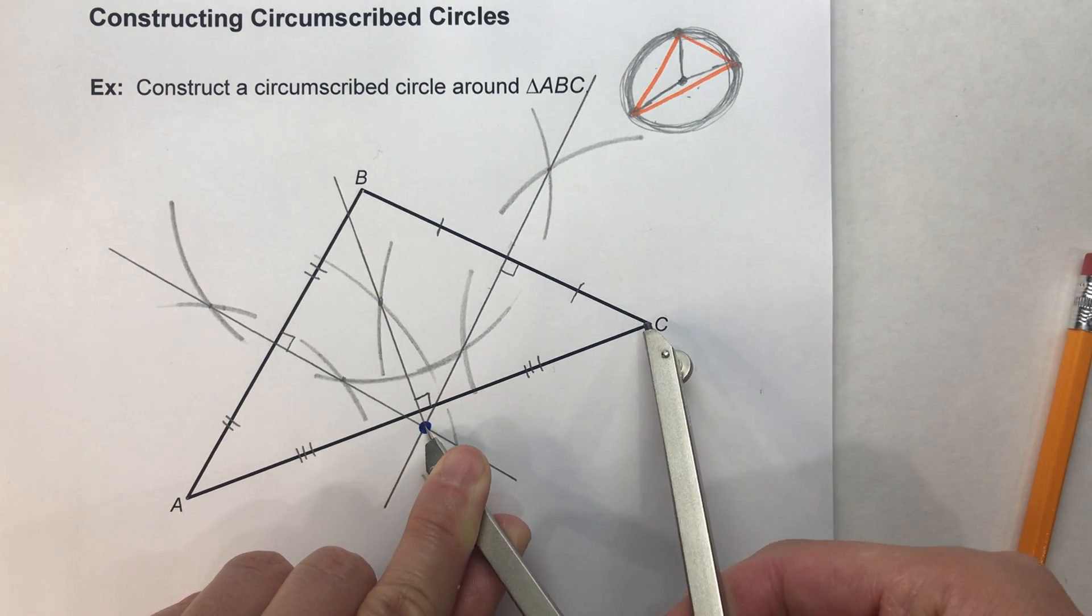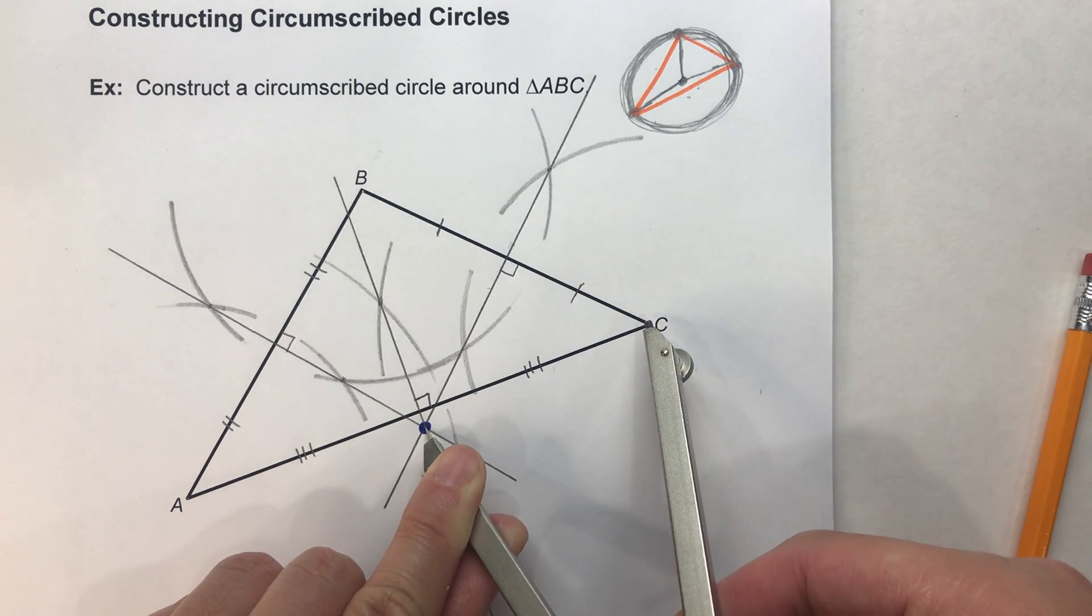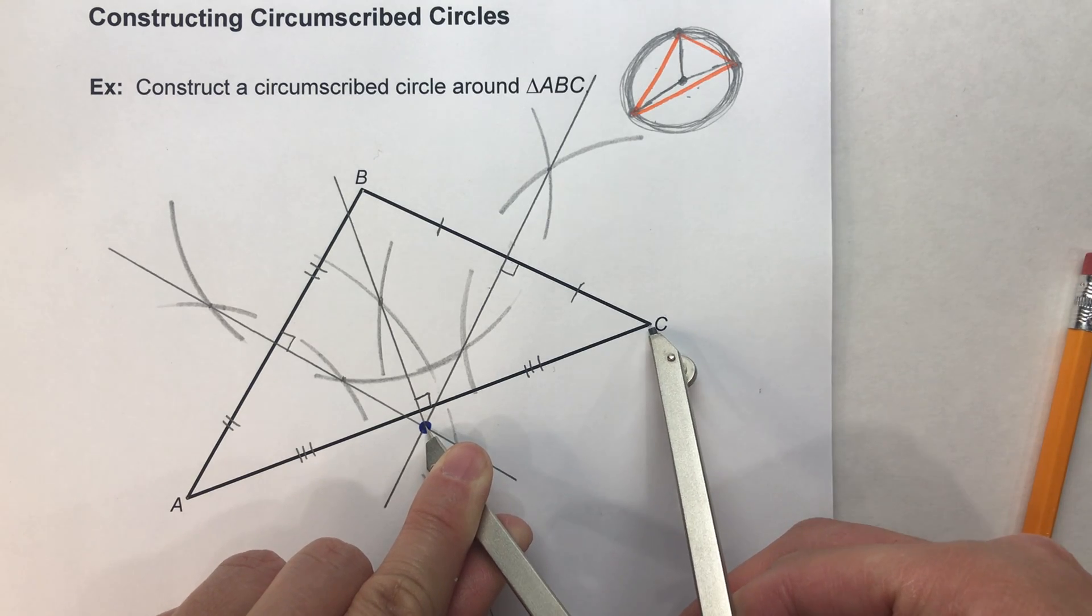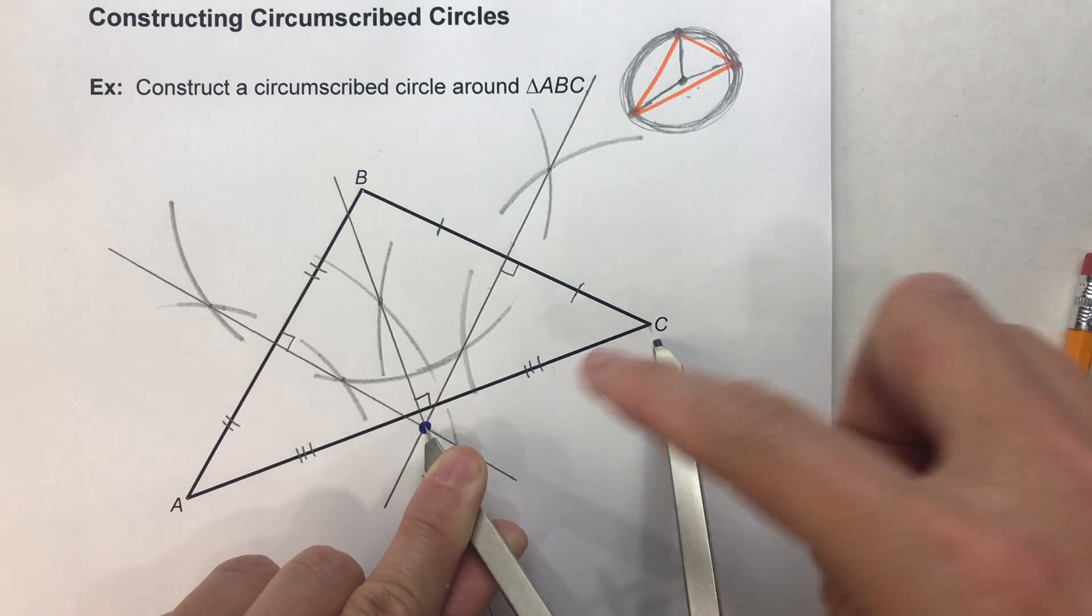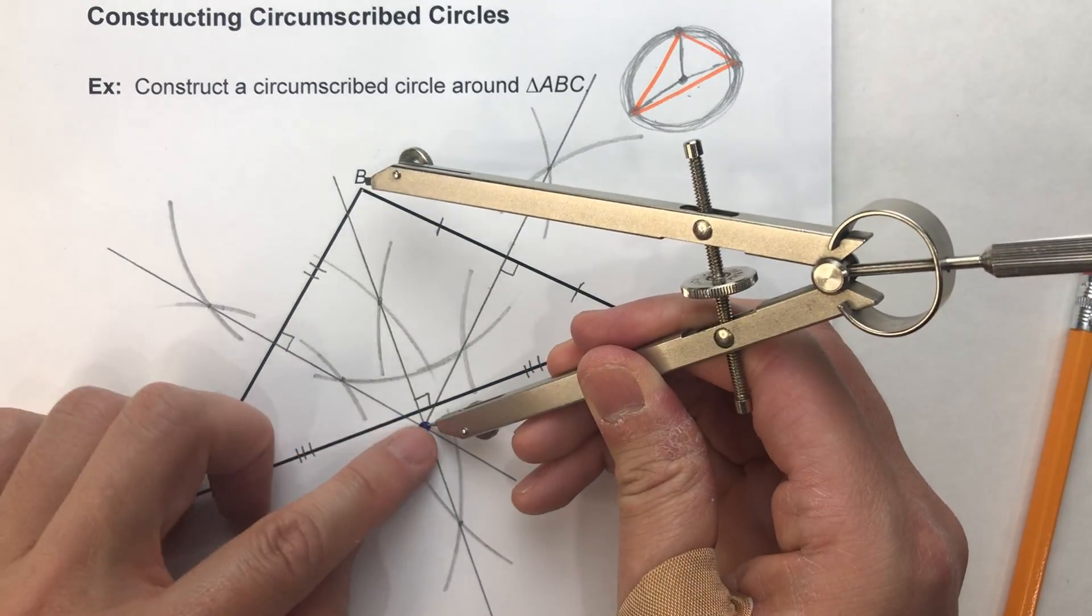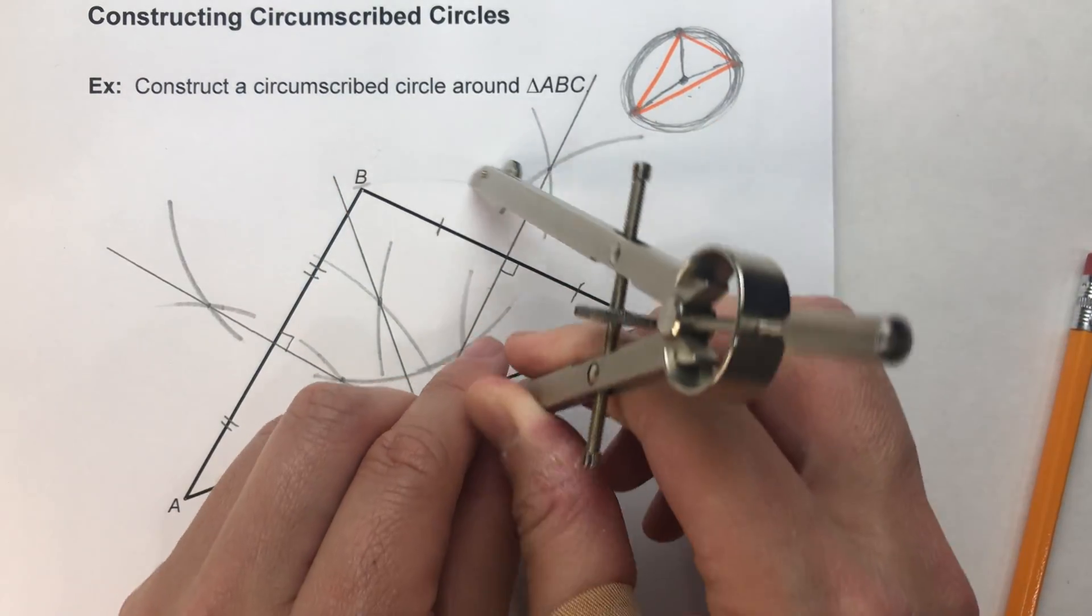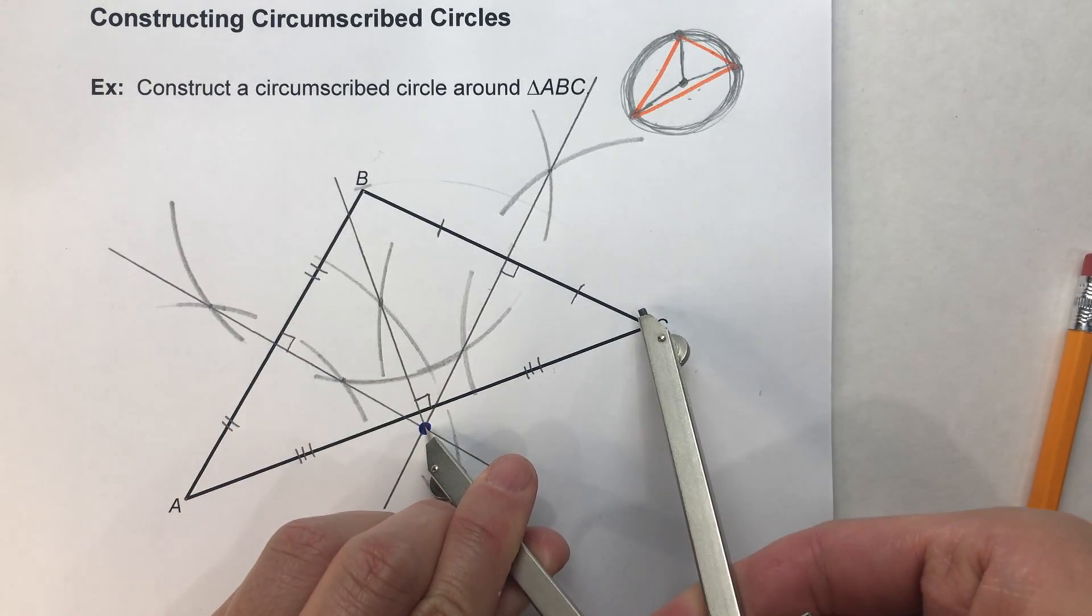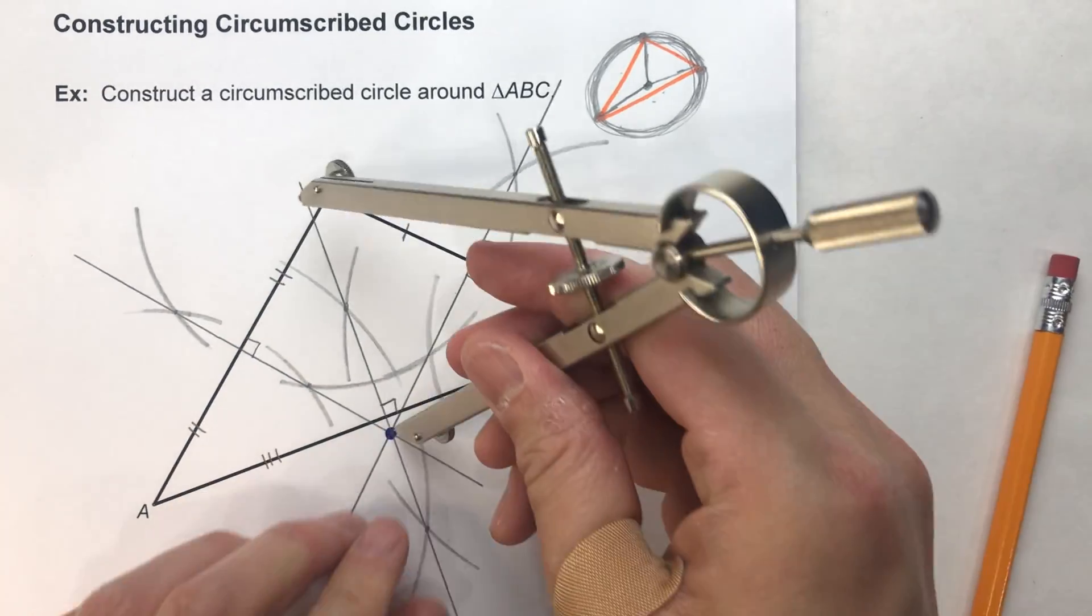And it doesn't matter which one you pick, because they should all be the same distance. So let's check. My circumcenter to C, a little bit bigger, right here. My circumcenter to B, maybe I'm a little big. Let's say here.